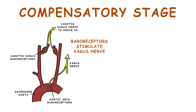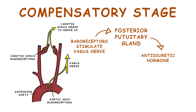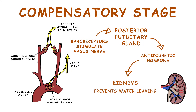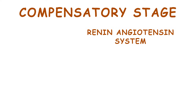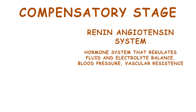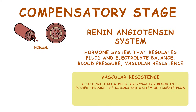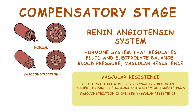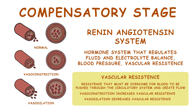Baroreceptors also stimulate the vagus nerve, which stimulates the release of antidiuretic hormone from the posterior pituitary gland, preventing water from leaving the kidneys and thus increasing blood volume. The renin-angiotensin system also kicks into gear. This is a hormone system that regulates fluid and electrolyte balance, blood pressure, and vascular resistance. Vascular resistance is the resistance that must be overcome for blood to be pushed through the circulatory system and create flow. Vasoconstriction increases vascular resistance, while vasodilation decreases it.